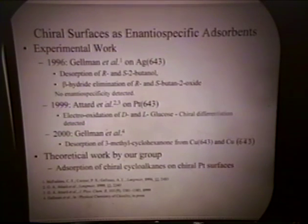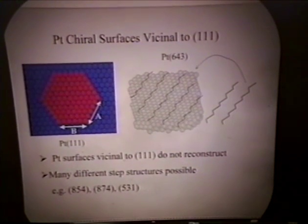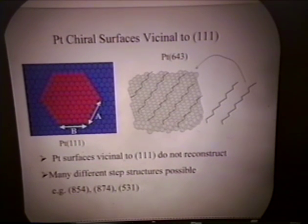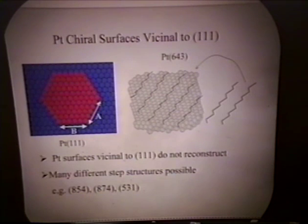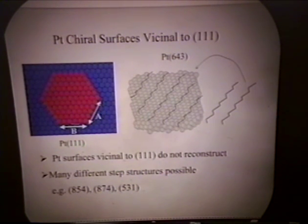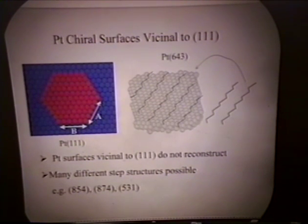We have to know what the surface looks like. For the rest of this talk, I'm going to concentrate on platinum chiral surfaces, which are obtained by cutting vicinal to the 1-1-1 plane. One complexity that's removed is these surfaces do not reconstruct, so we don't have to worry about that. When they're prepared by cutting along the Miller index plane, there's a formation of two types of steps shown here, labeled A and B, which differ in their orientation of the top layers with the bottom layers. Cutting along different high Miller index planes gives you different A and B length structures.